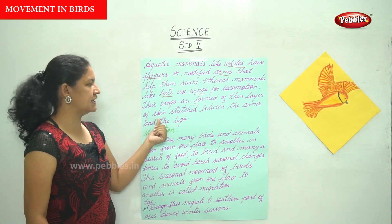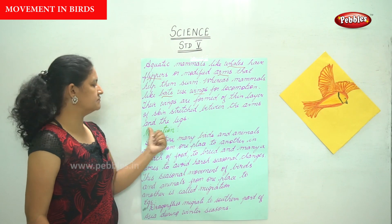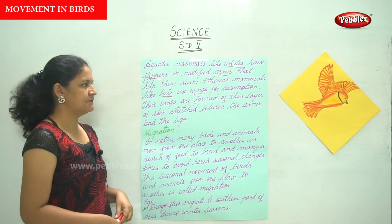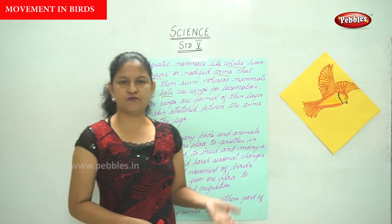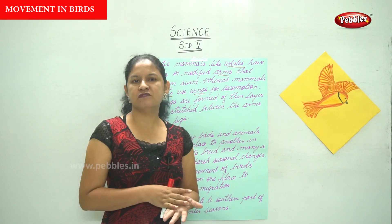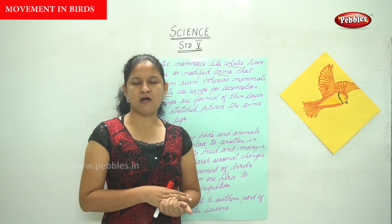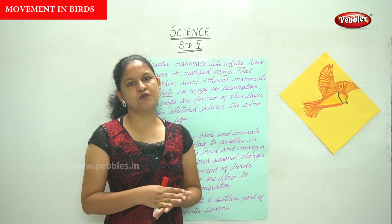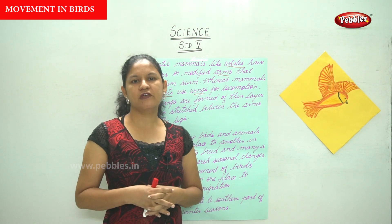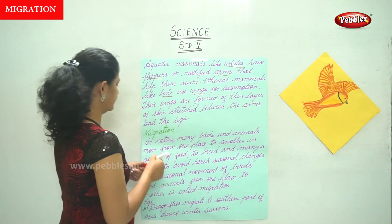The bat's wings are formed of a thin layer of skin stretched between the arms and the legs. This covers movement in insects, movement in amphibians, movement in mammals, movement in fish, and so on. Moving on to the next topic: migration.